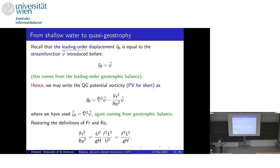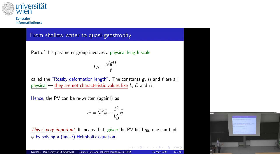Using the stream function — just the leading-order displacement field from geostrophic balance — we can rewrite the PV in terms of the stream function. Instead of η̃₀ you have this form. Concerning the ratio of (Froude/Rossby)², restoring the definitions: Froude is U/√(gH), Rossby is U/fL, squaring and canceling u², you can write this as f²L²/(gH). These can be combined into a new length — the Rossby deformation length, also called the deformation radius — which is simply L_D = √(gH)/f, the gravity wave speed divided by the Coriolis frequency.